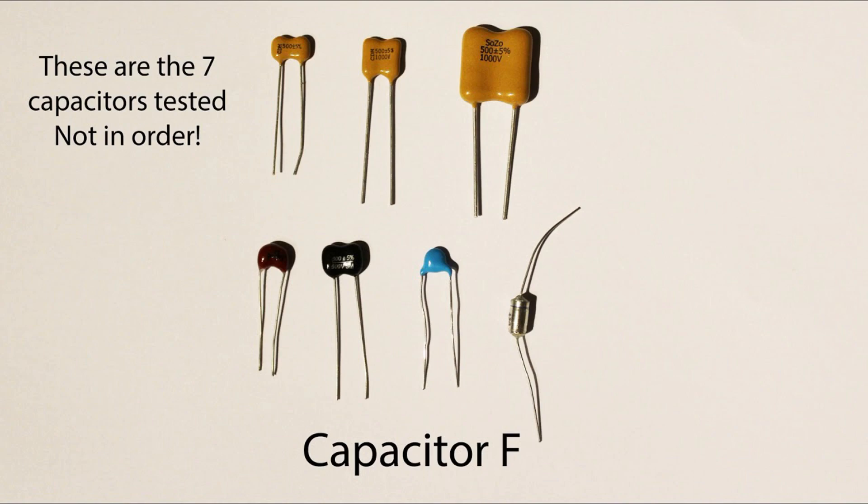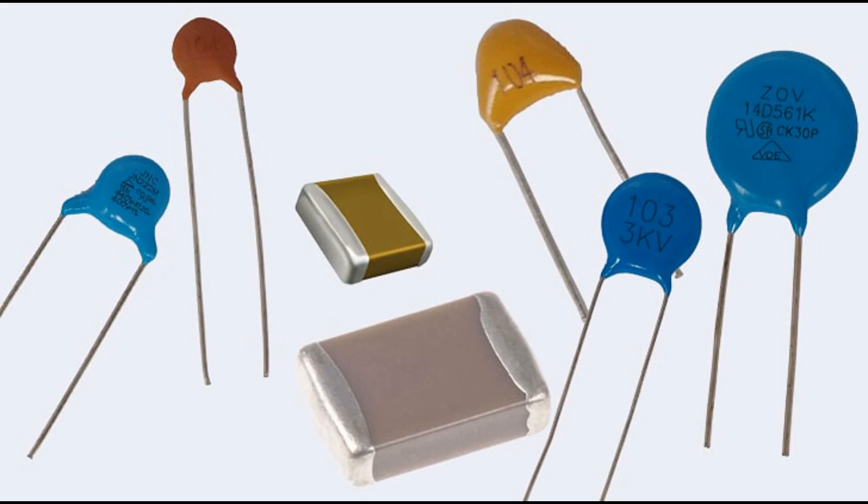Coupling and DC blocking: Ceramic capacitors are used to couple or block direct current (DC) signals while allowing alternating current (AC) signals to pass through. They are employed in audio amplifiers, radio frequency (RF) circuits, and signal processing applications.